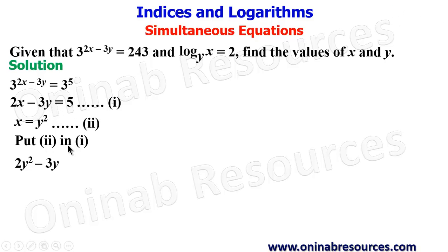So we are bringing this 5 to the left-hand side, so that will now form a quadratic equation. The quadratic equation is 2y squared minus 3y minus 5 equals 0.